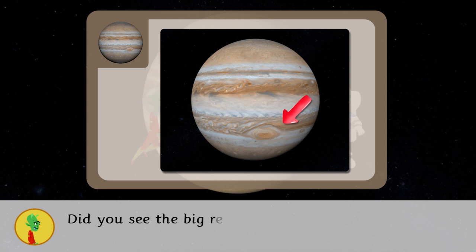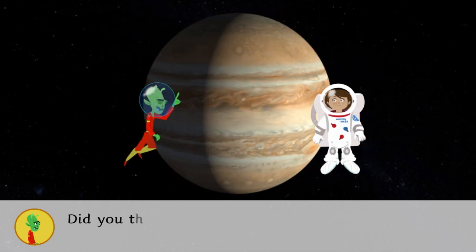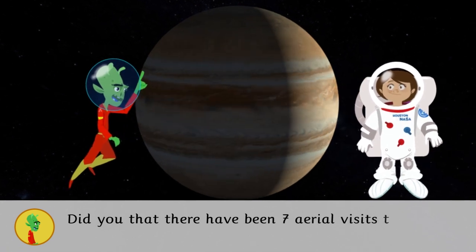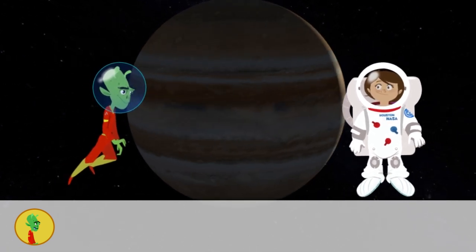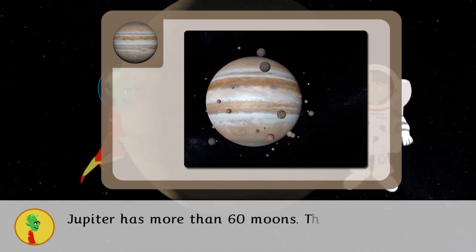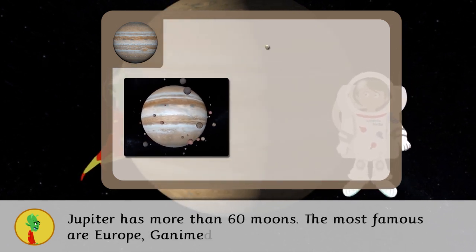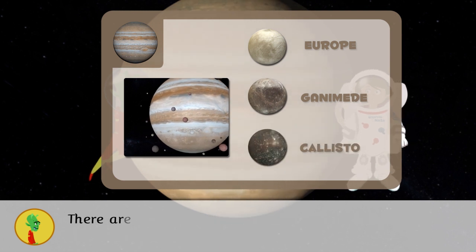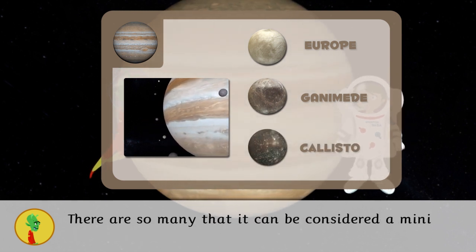Did you see the big red spot? It is a huge storm. Did you know there have been seven aerial visits to Jupiter? Jupiter has more than 60 moons. The most famous are Europe, Ganymede and Callisto. There are so many that it can be considered a mini solar system.